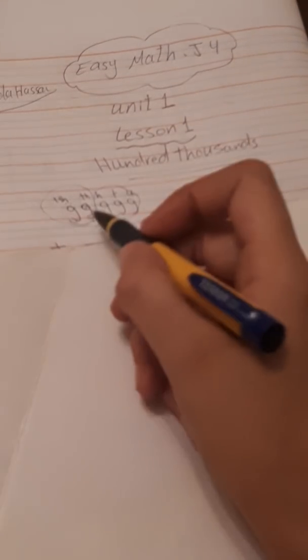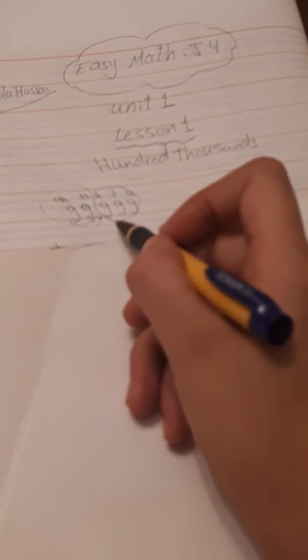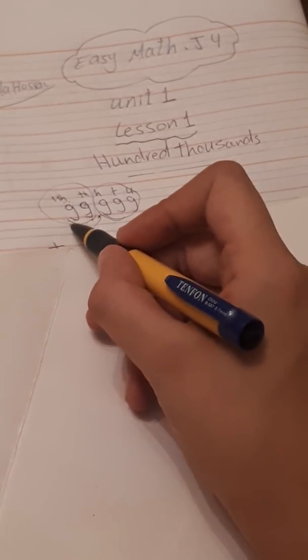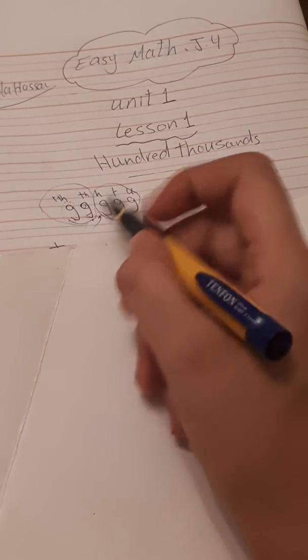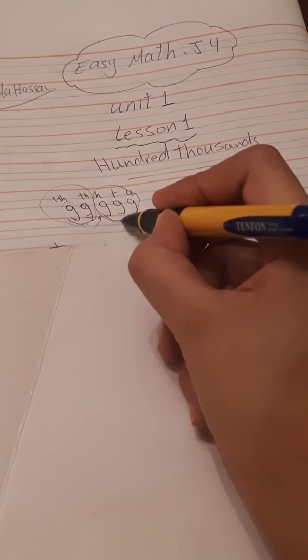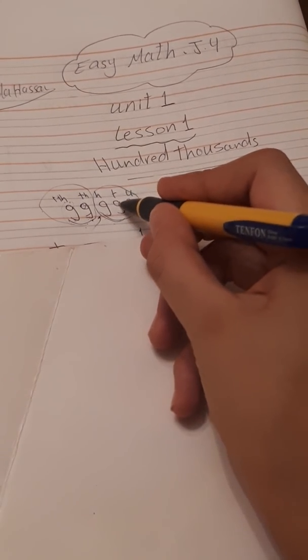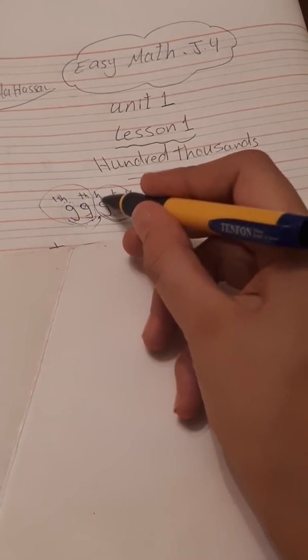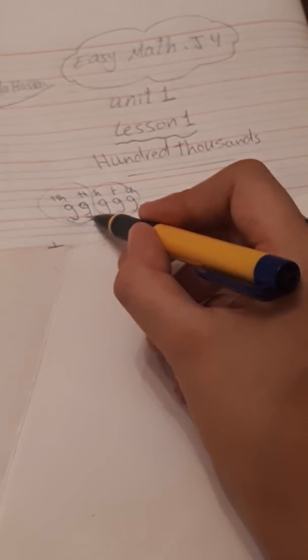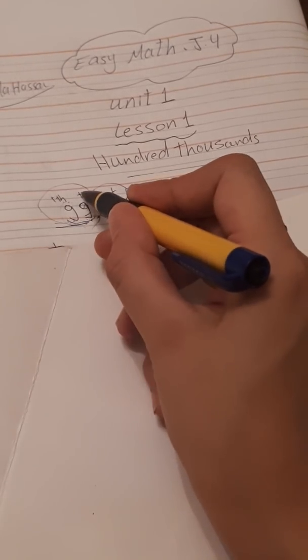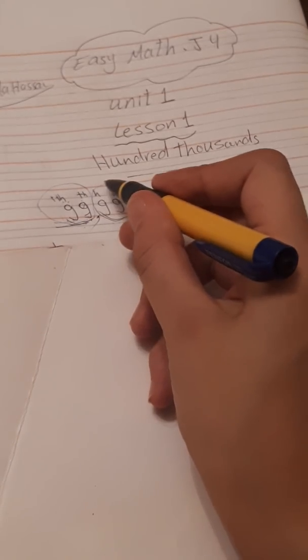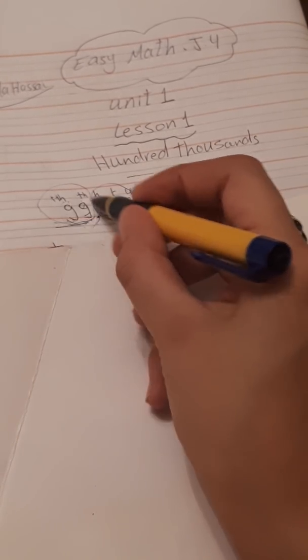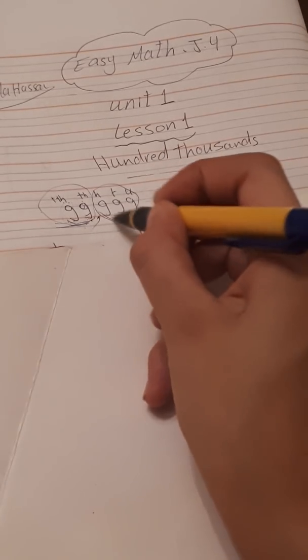In the first lesson of Unit 4, we studied how to read this number. This format is from five digits. We will divide it into two parts: this is the family of hundreds - units of the hundreds, tens of the hundreds, and hundreds of the hundreds - and this is the family of thousands - units of the thousands, tens of the thousands. We will read the family of thousands alone and the family of hundreds alone.